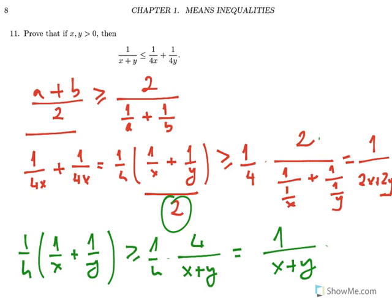So we used the arithmetic mean–harmonic mean inequality. Arithmetic mean is greater than or equal to harmonic mean.